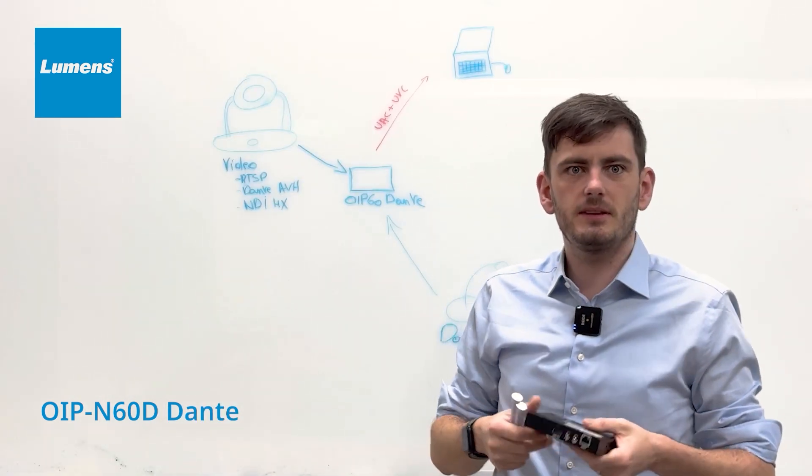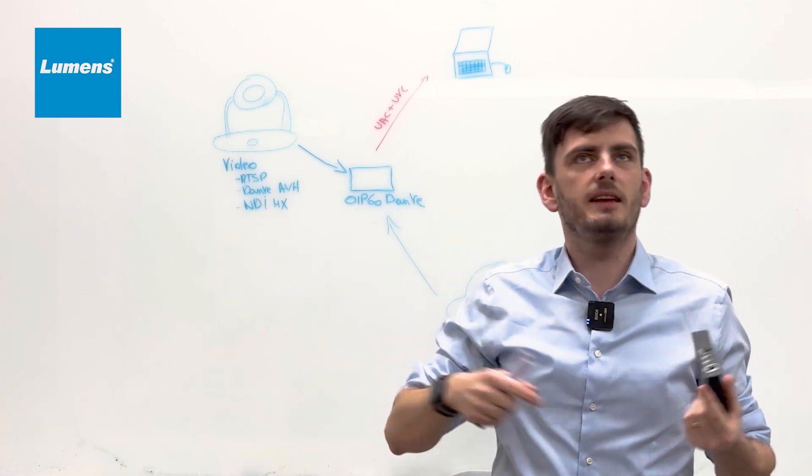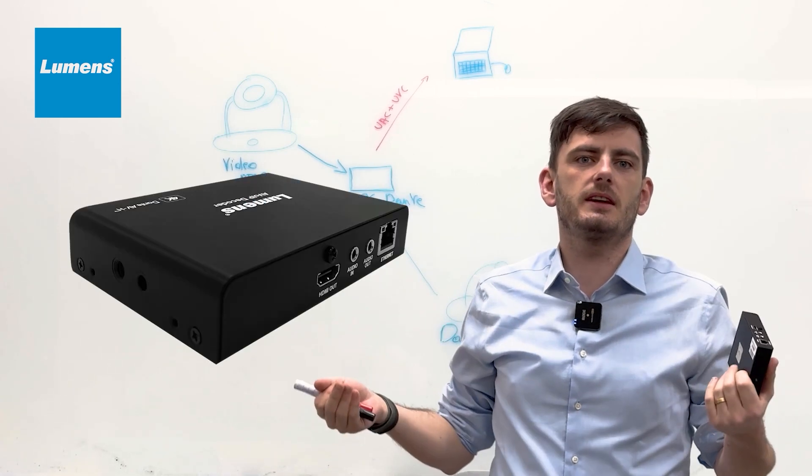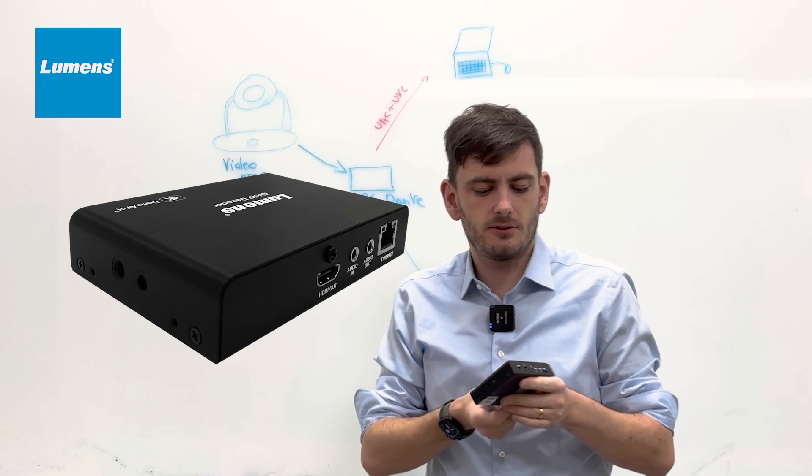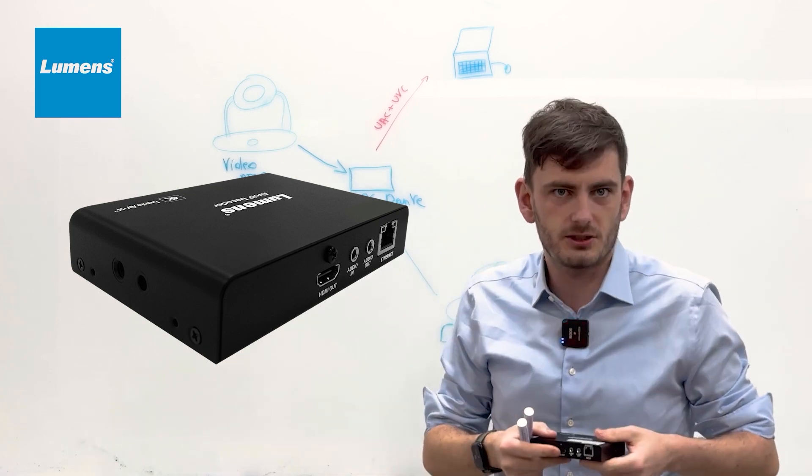What is the OIP60D? The OIP60D can take in an NDI signal, an RTSP signal, and convert that into USB or HDMI.